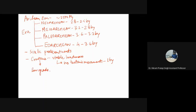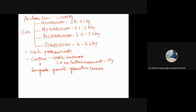Cratons generally have compositions of low-grade granite greenstone terrains. All the major continents have these cratons — for example, in Africa, Australia, Canada, South America, Europe, and India. The Archean Aeon is important in terms of the formation of these stable landmasses over which the further evolution of the Earth took place. Cratons are stable landmasses showing no noticeable tectonic movements for at least the last one billion years and are formed of low-grade granitic greenstone terrains.